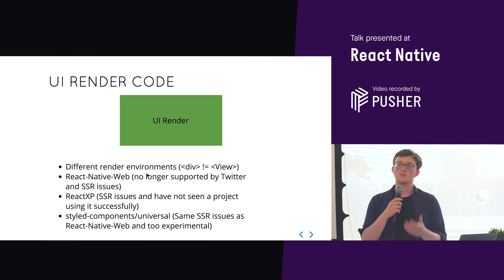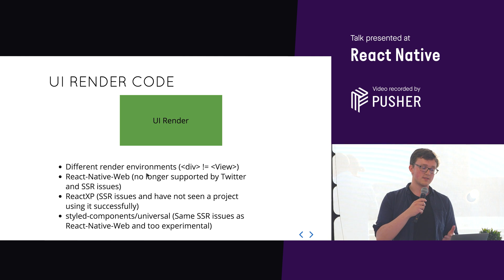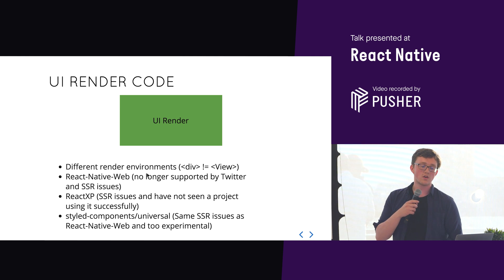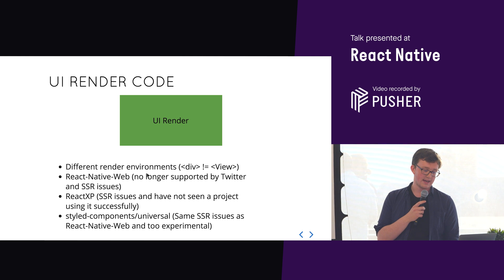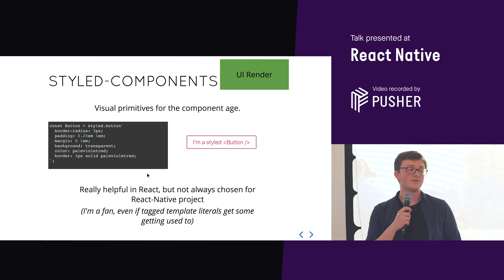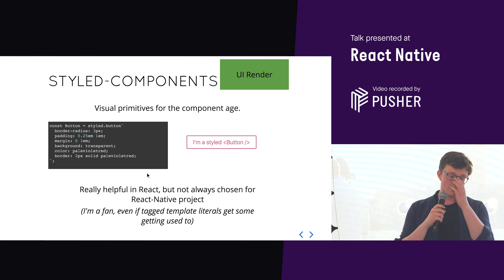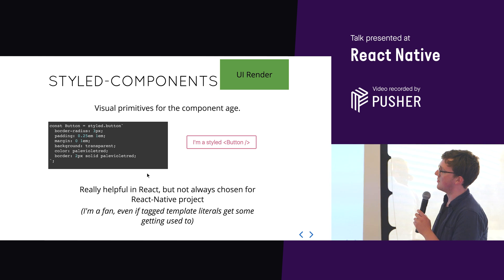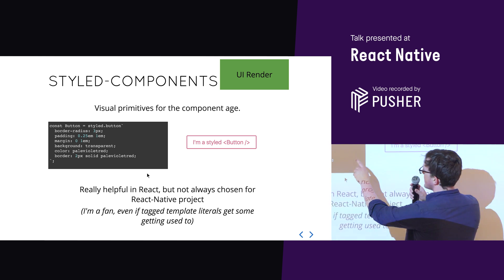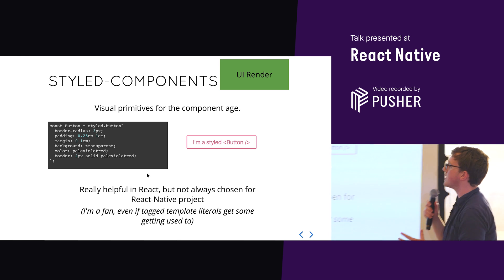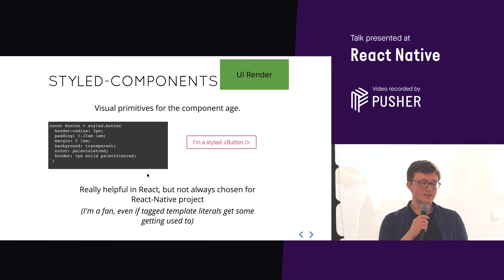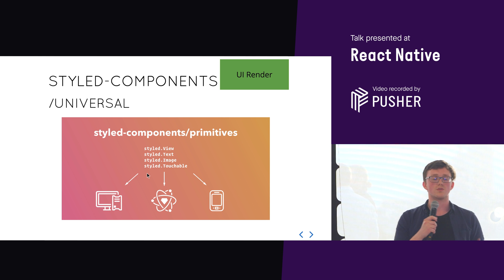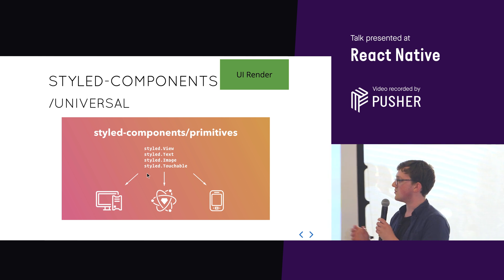Twitter actually withdrew support of the open source React Native Web library because they said they didn't have the facilities to support it. There's also React XP, which as Anna mentioned Microsoft is more pushing Xamarin. And finally, Styled Components Universal — so we saw Styled Components in Anna's talk. It's a set of visual primitives for the component age. You can have a button using CSS-style syntax, and they use this tag template literals syntax where you can pass in a function call. We found it really useful on React projects.